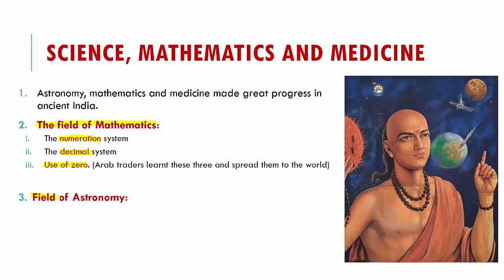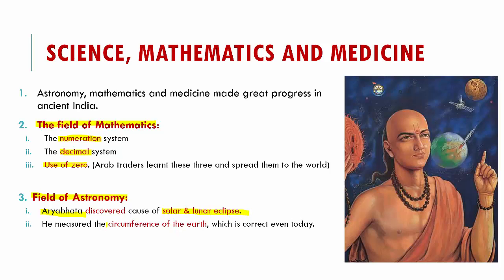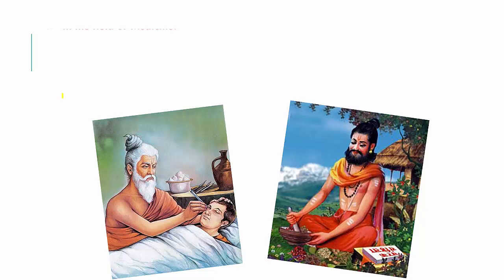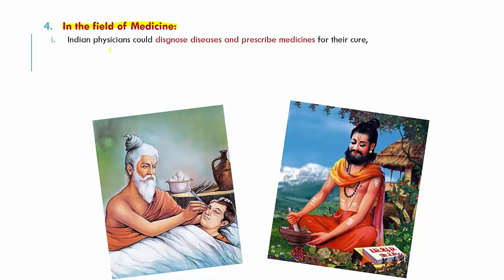In the field of astronomy, Aryabhata discovered the cause of solar and lunar eclipses. He measured the circumference of the earth using mathematical formulas, which is still considered correct today. He also stated that the sun is stationary and the earth revolves around it. He wrote a book on mathematics and astronomy also called Aryabhatiya.